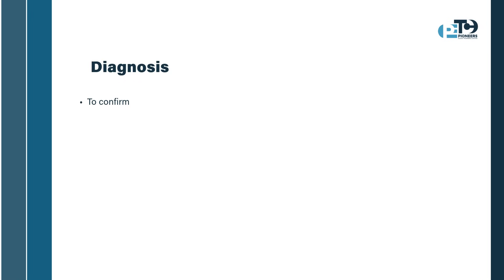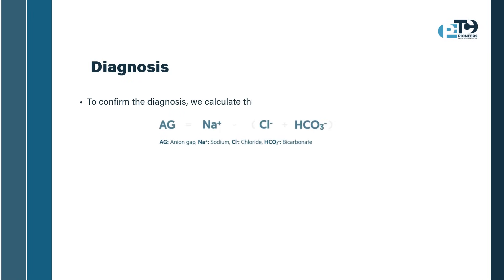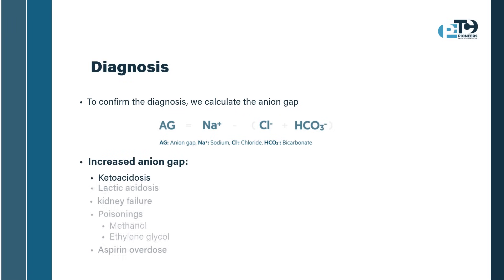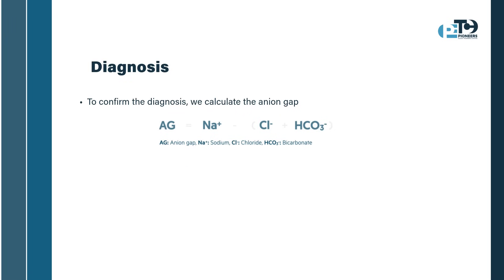To confirm the diagnosis, we calculate the anion gap. A high anion gap points to conditions like ketoacidosis or toxin ingestion. Meanwhile, a normal anion gap suggests causes like diarrhea or renal tubular acidosis.